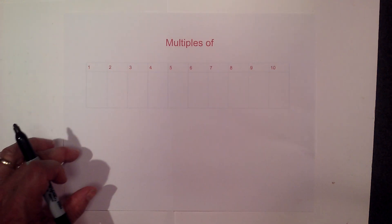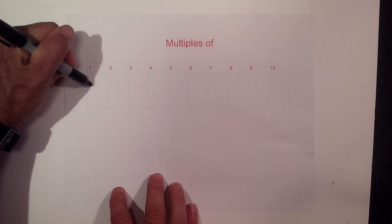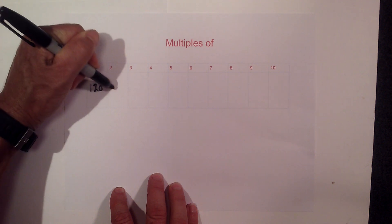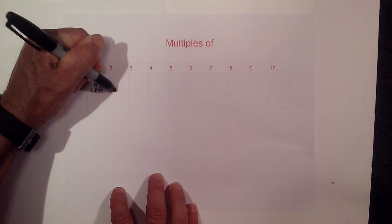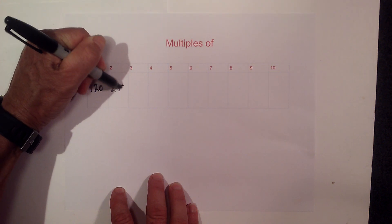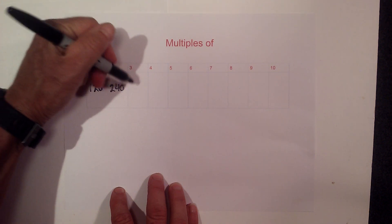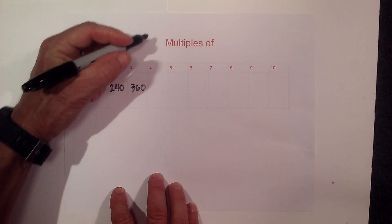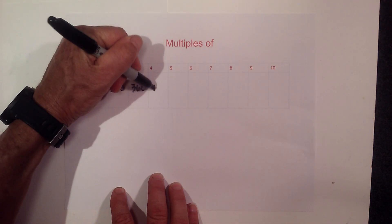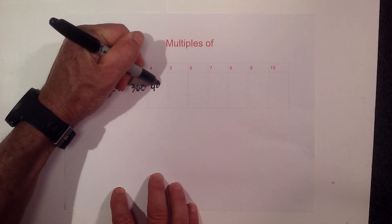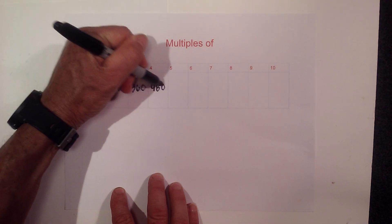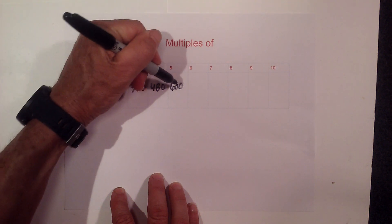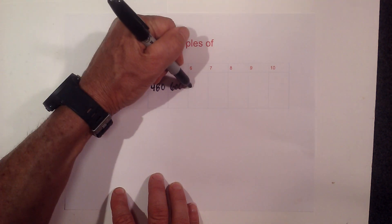The multiples of 120 are as follows: 120, 240, 360, 480, 600.